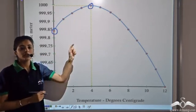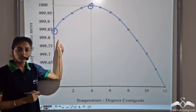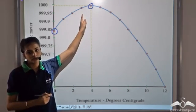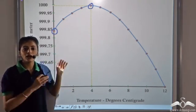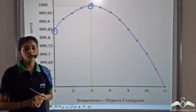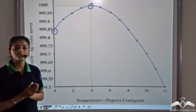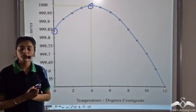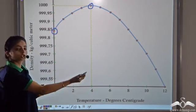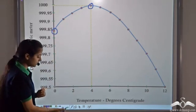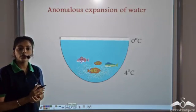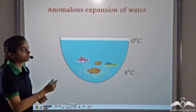We observe that the density of ice is lesser as compared to that of water, and this is the reason why ice floats on water. This unique property of water enables marine life to survive in colder regions. Since water shows this behaviour of density, it is said to exhibit anomalous expansion.